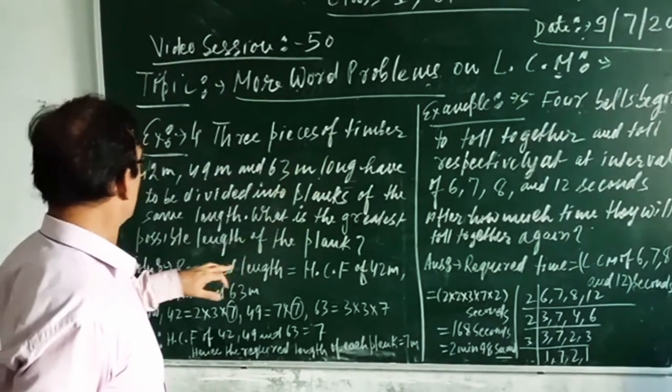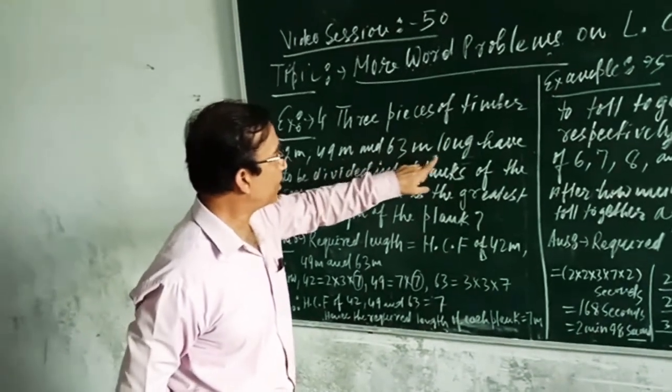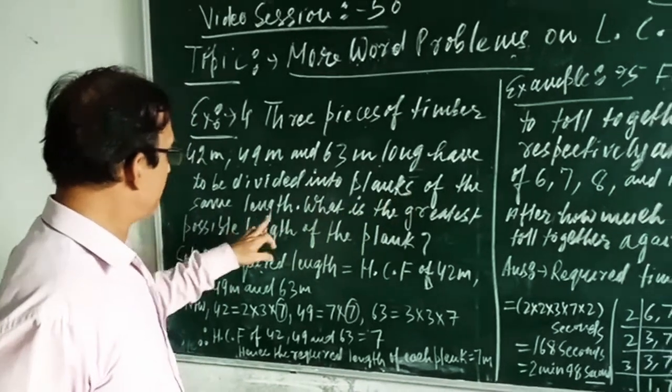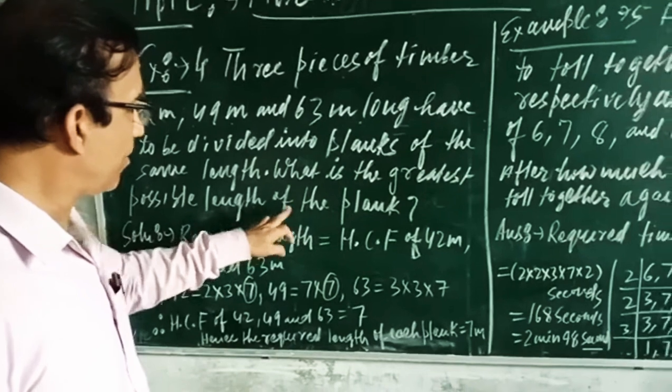3 pieces of timber, 42 meter, 49 meter and 63 meter long have to be divided into plants of the same length. What is the greatest possible length of the plant?